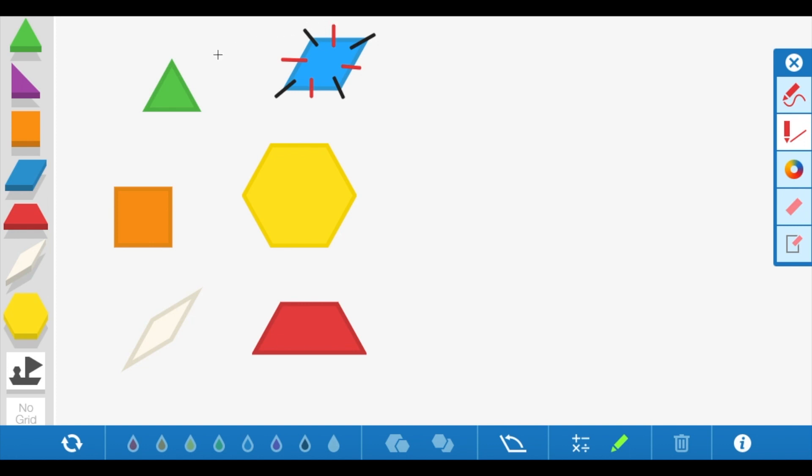Now let's look at the triangle. The triangle has three sides, and it also has three vertices, or three corners.